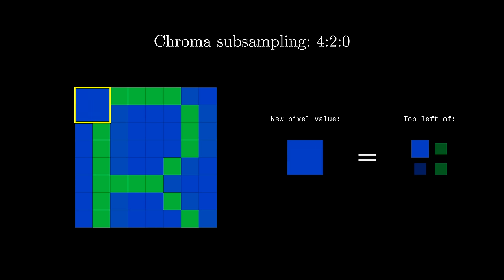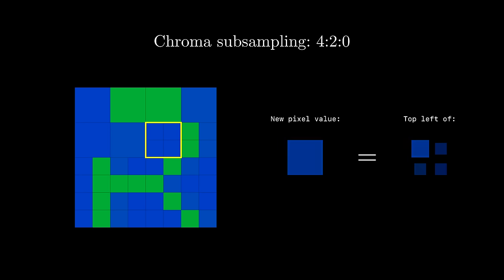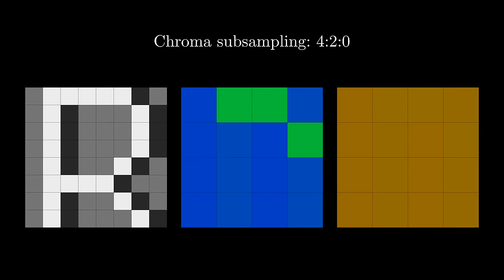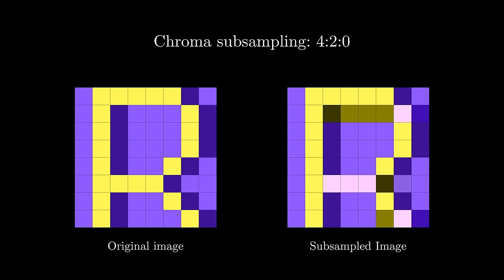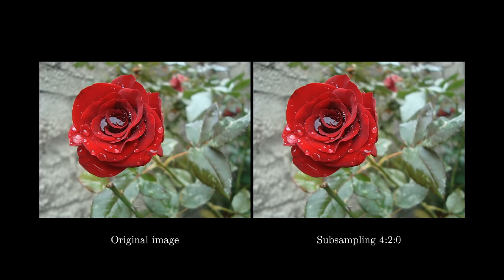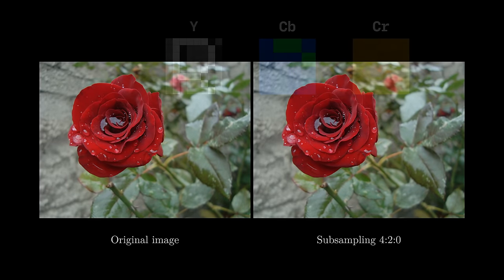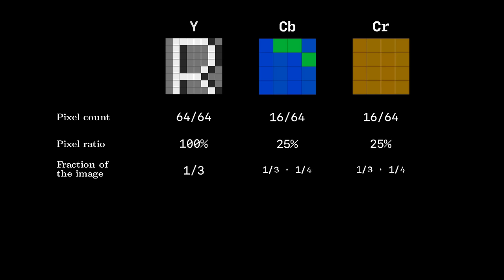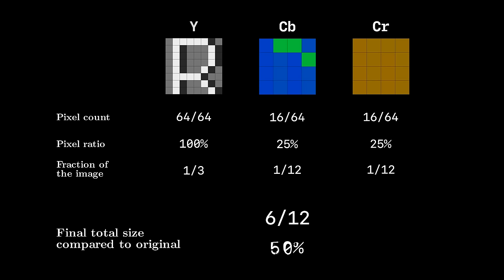Chroma subsampling is the same exact idea, but instead of averaging, we just choose one of the samples — usually the top left pixel — to be the color of the entire 2x2 block. Once we have these fewer samples from the color components, we merge them with the luma component which retains the original 16 pixels, giving us our subsampled image. By merging 2x2 blocks on the Cb and Cr channels into one color, we're left with a quarter of the original data in each color channel, shrinking the total file size by 50%.